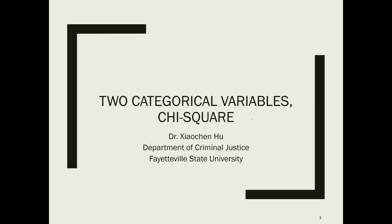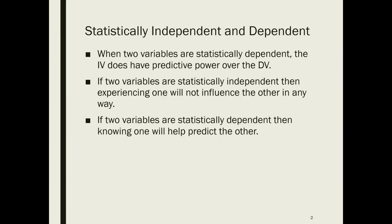In this video, we are going to talk about a chi-square hypothesis test. When two variables are statistically dependent, the independent variable does have predictive power over the dependent variable — those two variables are somehow connected or related. If they are not related, then one variable is not going to impact the other variable.